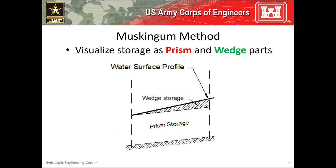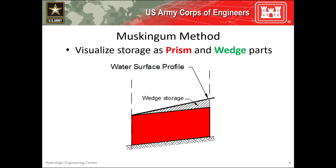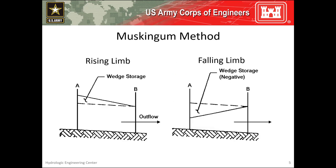Within the Muskingum method, storage within a reach is visualized in two parts: prism and wedge storage. In the example image, prism storage is shown in red and wedge storage is shown in green. During the rising stages of the flood wave, the wedge storage is positive and added to the prism storage. This situation is depicted in the left-hand image — here's prism storage, and here's wedge storage during the rising limb.